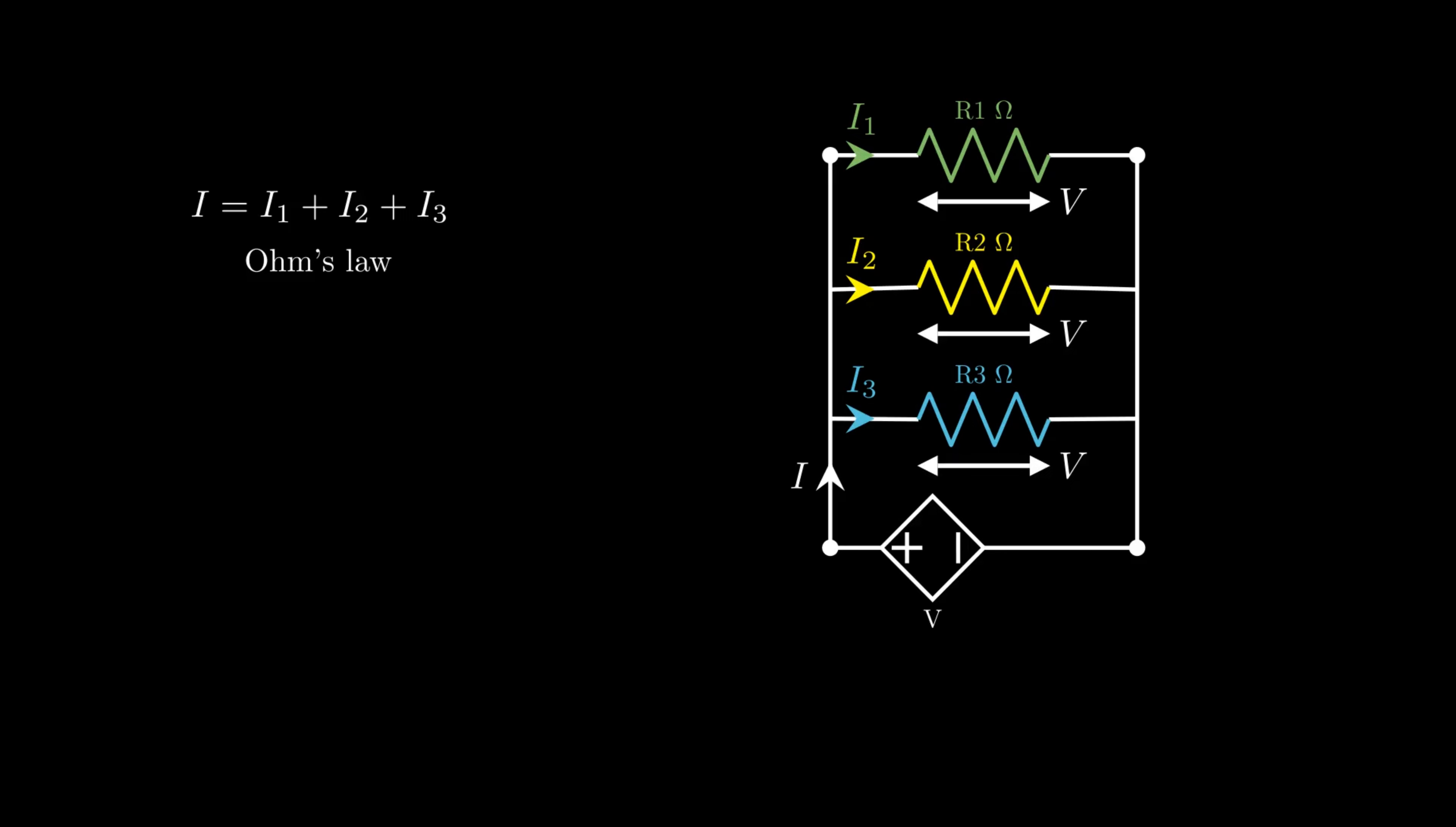Using Ohm's law, I equals V over R, where R is the effective resistance in the circuit. So V over R equals V over R1 plus V over R2 plus V over R3. Taking V as common factor from all three terms, we get 1 over R equals 1 over R1 plus 1 over R2 plus 1 over R3. So in parallel combination, the reciprocal of effective resistance is equal to the sum of reciprocal of individual resistances of each resistor.